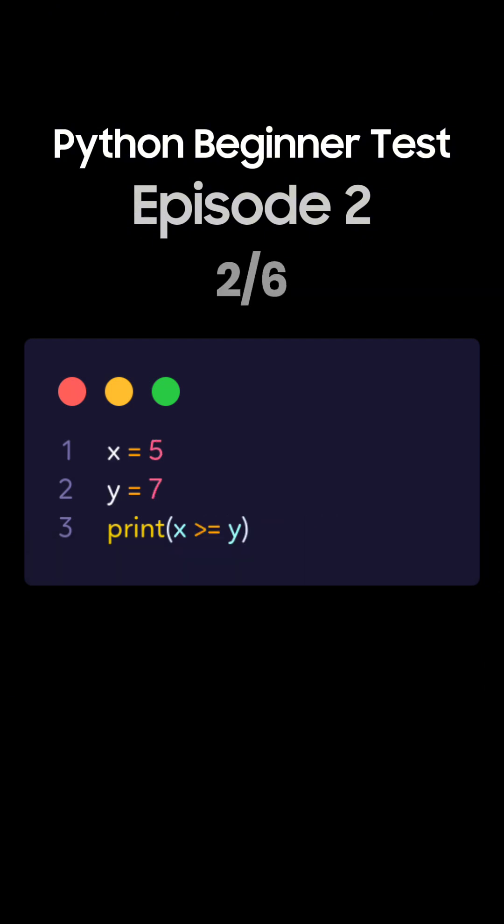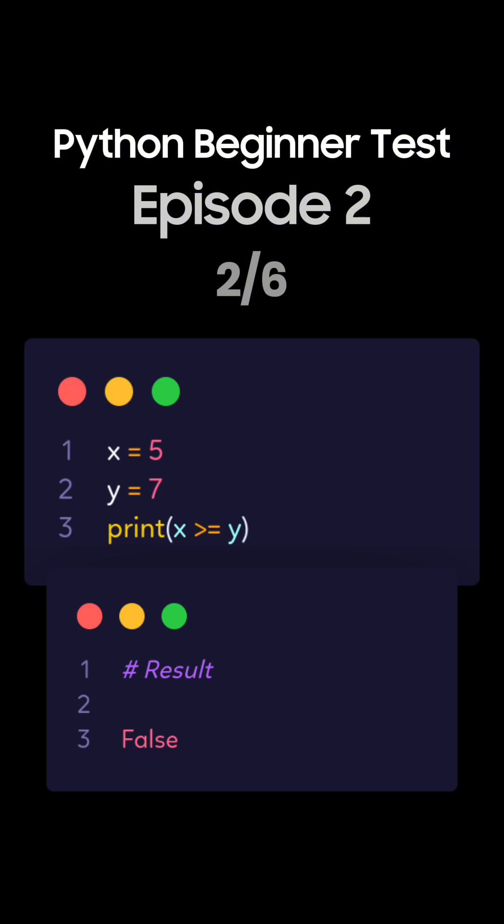Question 2. What's the output of this Python code using comparison operators? This is the correct answer. Since 5 is not greater than or equal to 7, the comparison returns false.